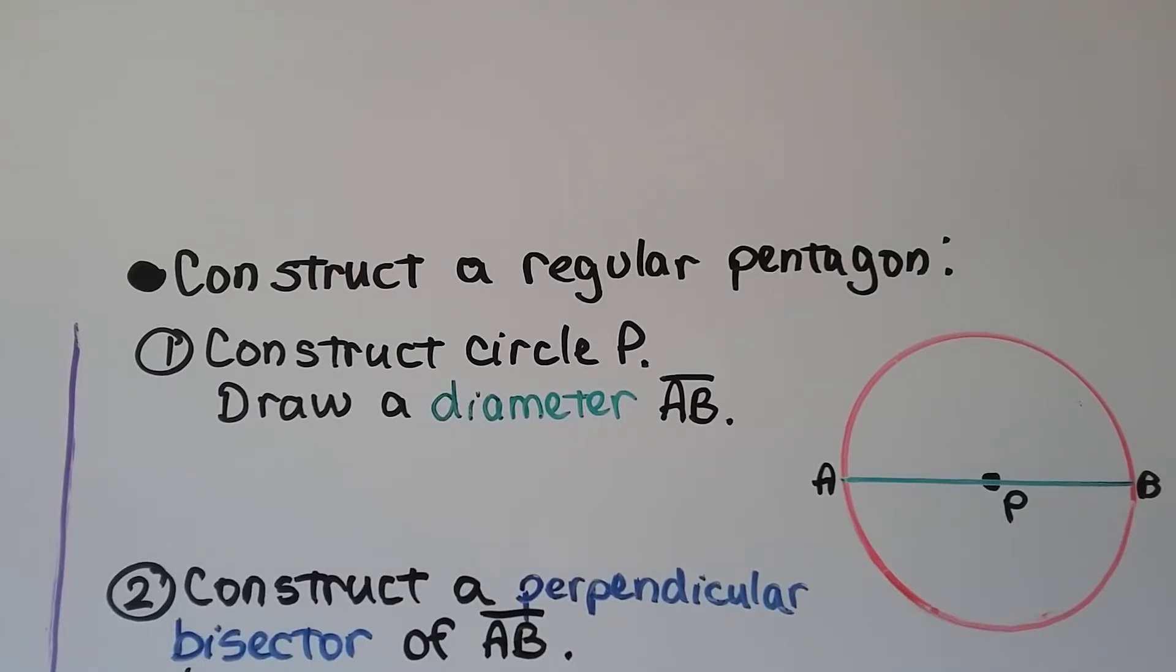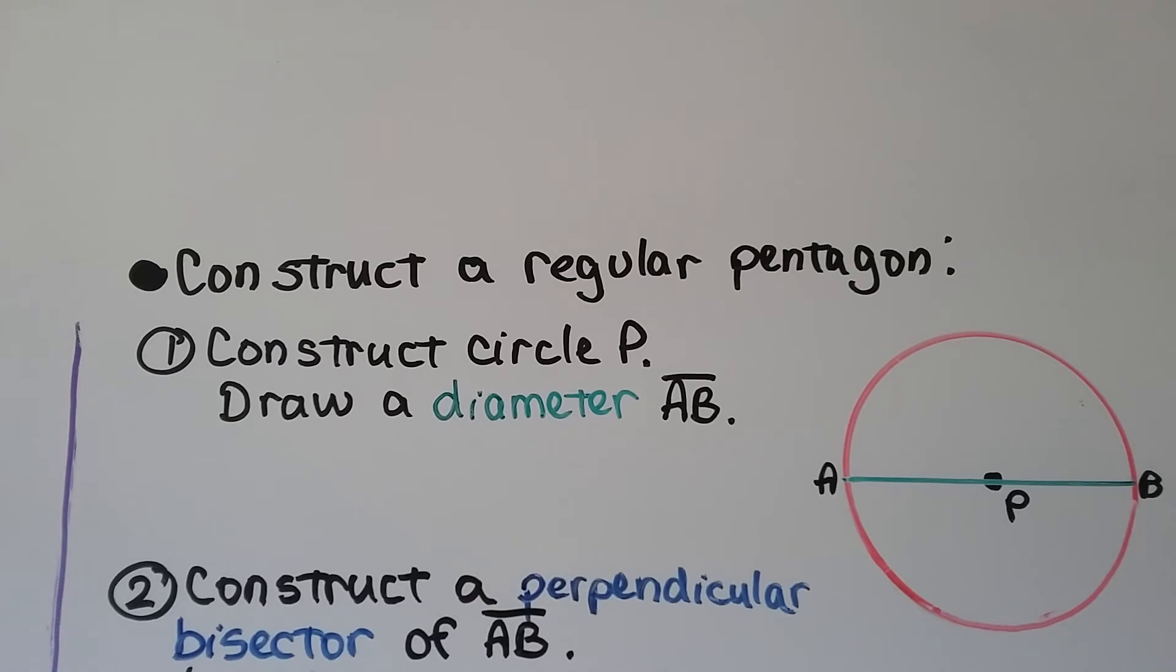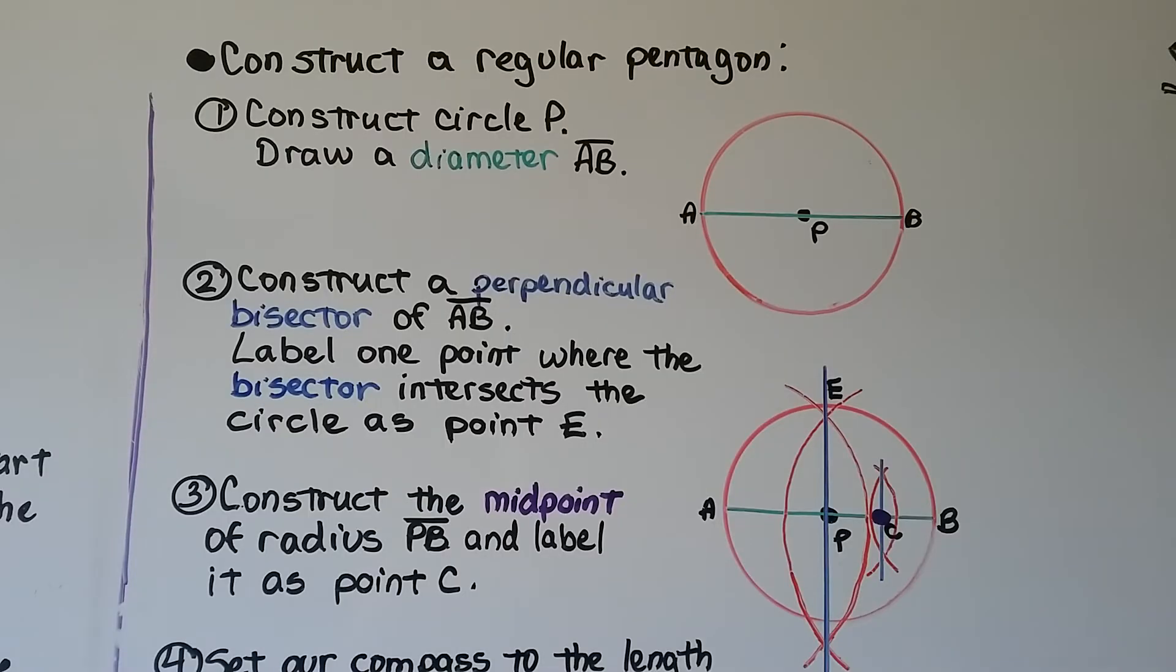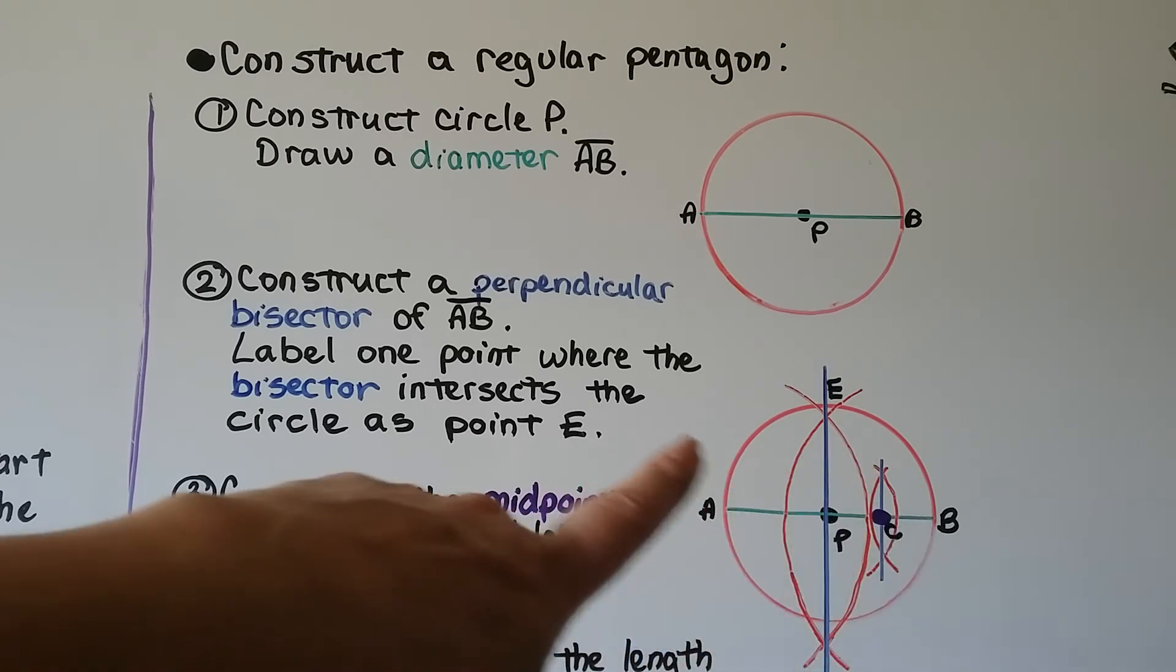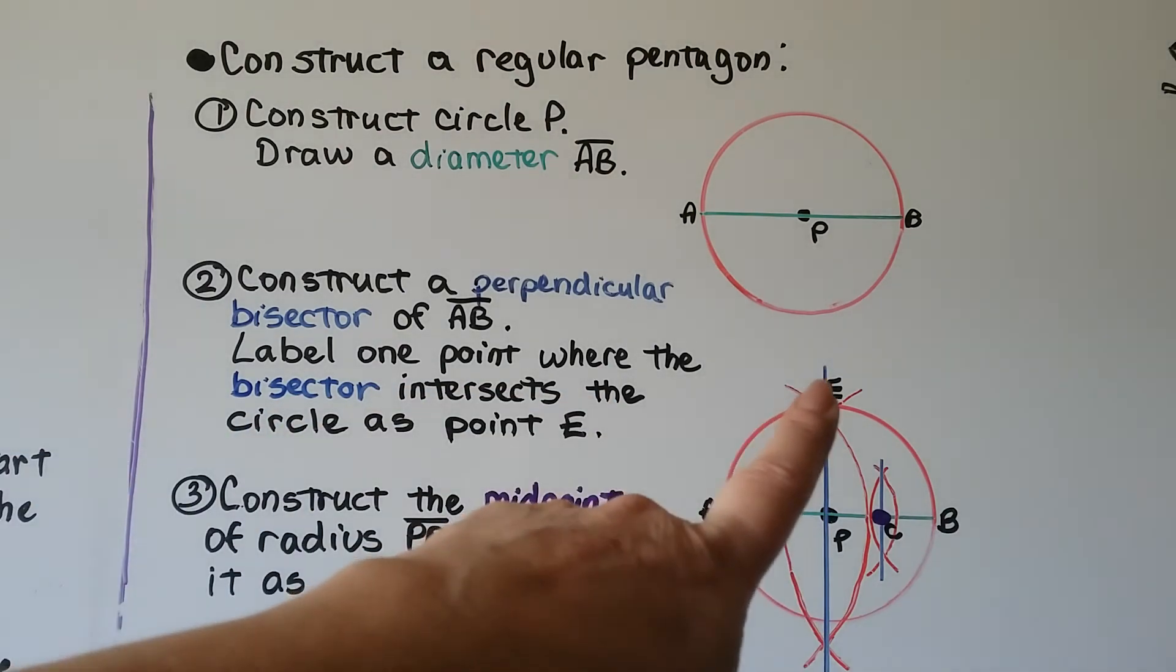We can construct a regular pentagon. We construct circle P again and draw a diameter and label it as segment AB. We draw it through P. Next, we construct a perpendicular bisector of segment AB. We put our compass a little farther than P, make a big arc with the same setting, put it on B and make a big arc. Where they intersect, we draw our perpendicular bisector. We can label that E.